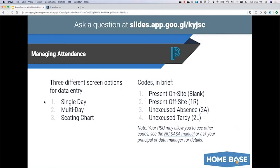So we've got the three different screen options for data entry. The single day screen — the chair — is probably the screen you're most used to. You click it and take one day of attendance. The multi-day screen lets you take multiple days of attendance on one screen and set the same attendance code for all of your students at one time.